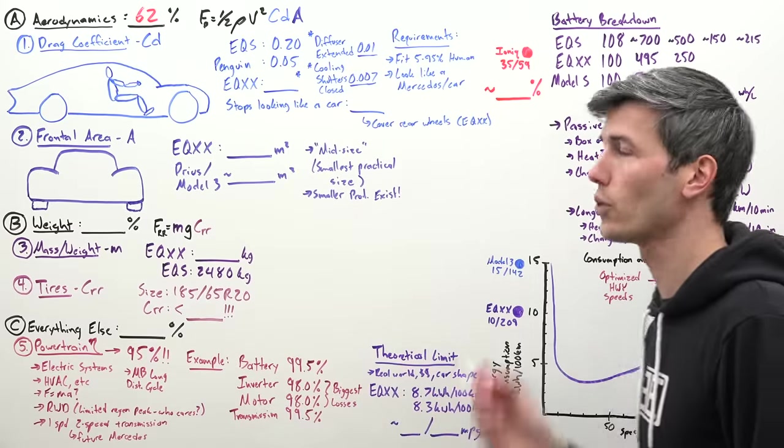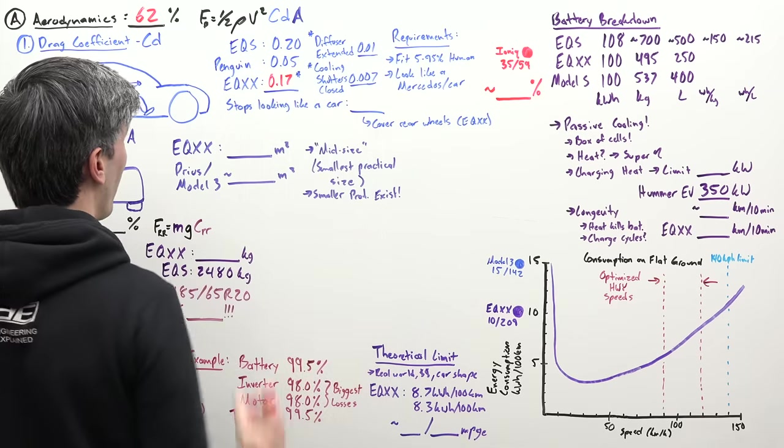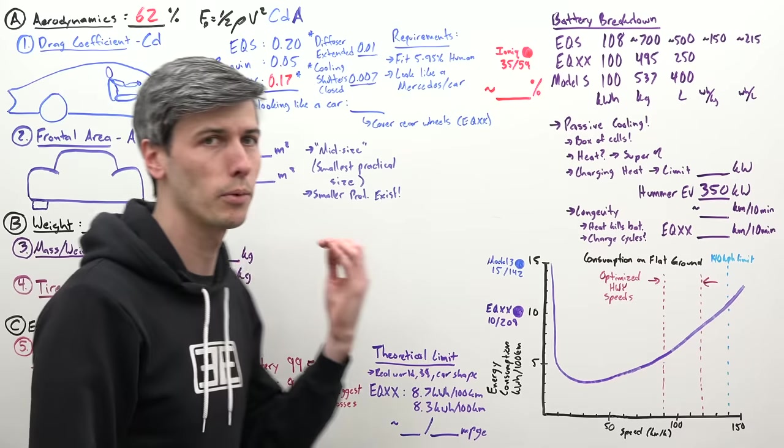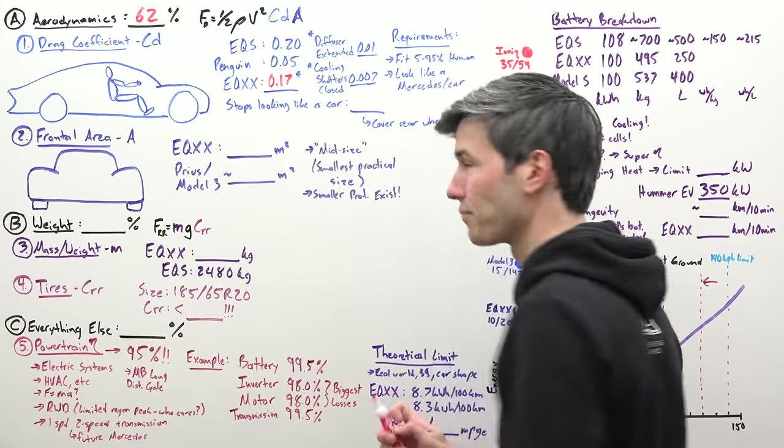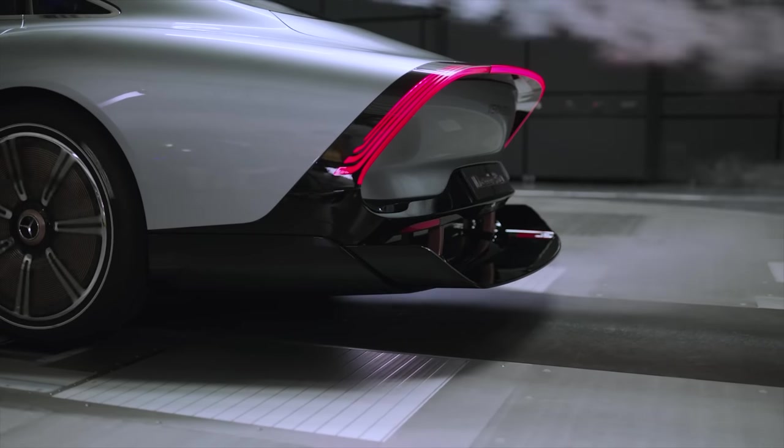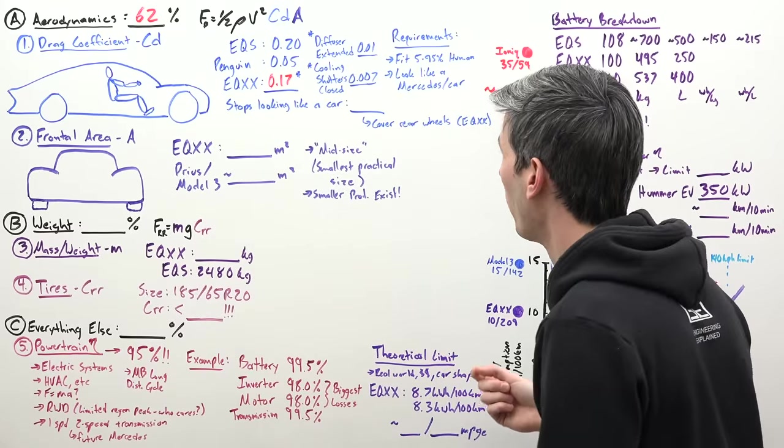This drag coefficient for the EQXX is 0.17, which is better than the best production car. There's some disclaimers that go along with this. First of all there's a diffuser that retracts out from the back of the vehicle. That gives you a point, takes you down from 0.18 down to 0.17.